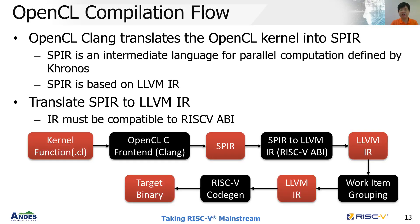This slide shows our OpenCL compilation flow. First, the OpenCL Clang compiler compiles the OpenCL kernel into SPIR. SPIR is an intermediate language for parallel compute defined by Khronos. SPIR is based on LLVM IR, but with some differences to match the RISC-V ABI, so SPIR is translated into LLVM IR compatible with the RISC-V ABI. Then work-item grouping is performed to create a new function-like code within a work-group. Finally, the target binary is generated by RISC-V code generation.